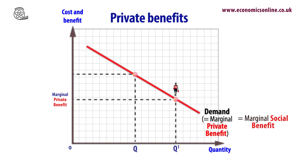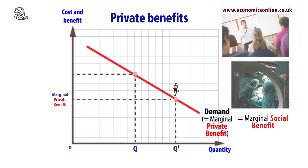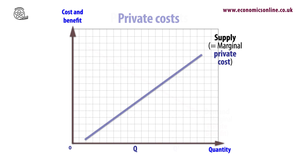In reality, the consumption of many goods creates an external benefit, including merit goods such as education and health care. We add the external benefits to the private benefits to discover the social benefits of consumption. Graphically, the addition of external benefits shifts the marginal social benefit curve up.